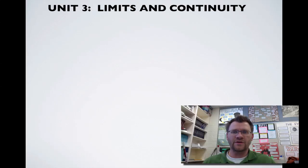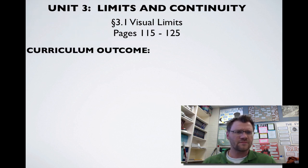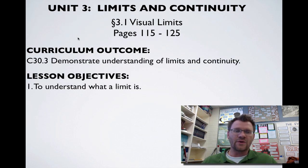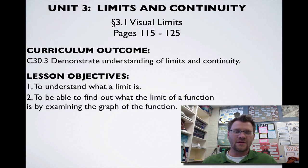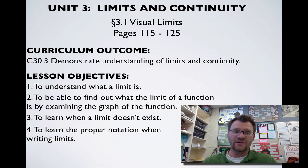Our third unit is limits and continuity, and we're looking at 3.1 visual limits on pages 115 to 125. That's 3.2 in your text but we're skipping the first section. Our curriculum outcome is to demonstrate understanding of limits and continuity. Our lesson objectives are to understand what a limit actually is, to find the limit of a function by examining its graph, to learn when a limit doesn't exist, and to learn proper notation when writing limits.